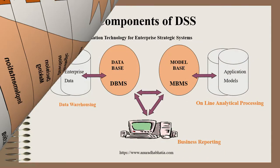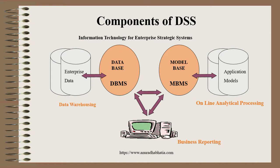Decision support systems are always very important. Here you see a database — a database management system or data warehouse. You have a model-based management system (MBMS) with application models: online analytical processing, online analytical planning, transaction processing systems, and business reporting. Whatever model we make for business intelligence, when it relates to the database, how quickly the extract, transform, and load process will be reported determines how the information technology for enterprise strategic systems works. Decisions have to be fast, as people need faster and quicker solutions happening at every click.